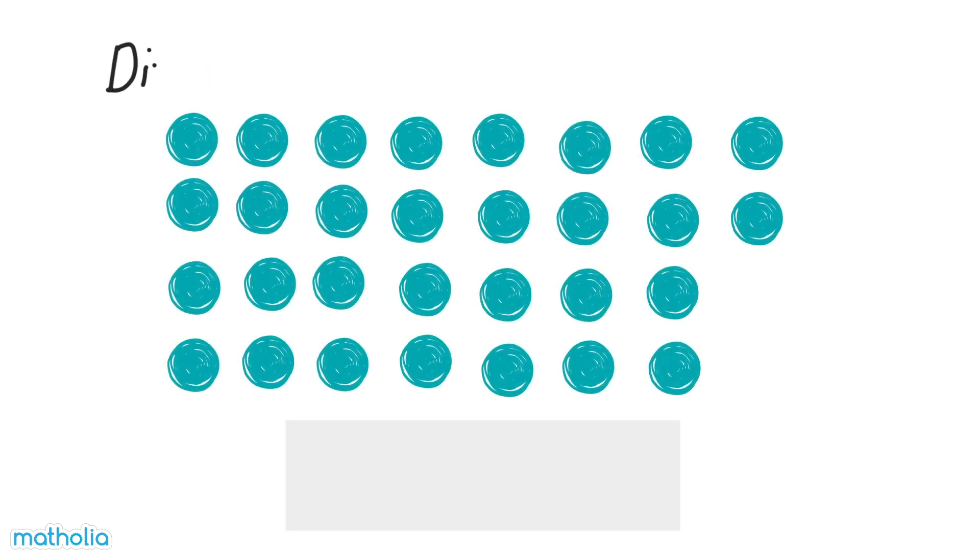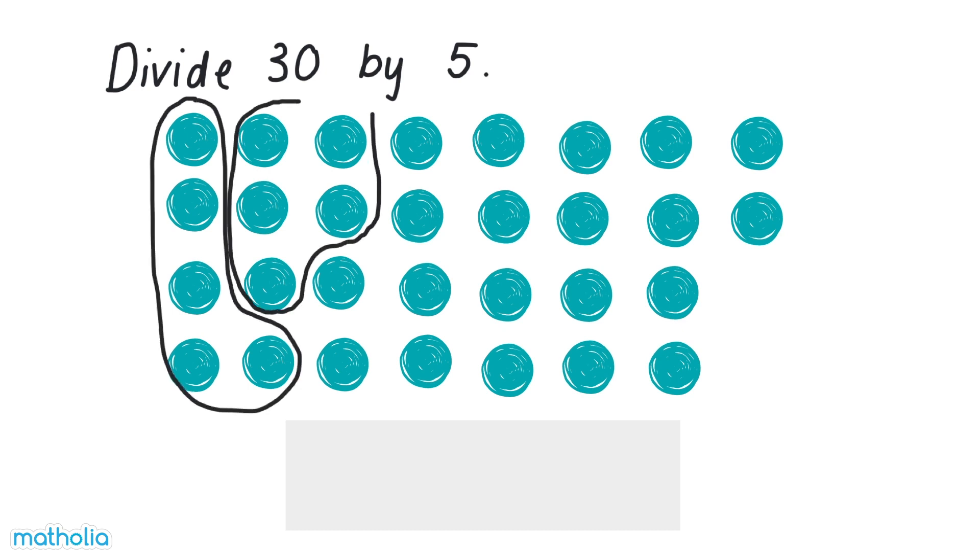Let's divide thirty by five. Can you divide thirty by five? To divide by five, we can circle groups of five dots and count the total number of groups.